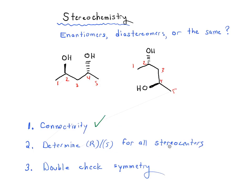Next, we want to determine R and S for all stereocenters. Let's make sure we can do that here. First of all, we've got to identify the stereocenters — hopefully you can tell we've got stereocenters here and here. Now we can always draw in the hydrogens; it can help to draw them in to make sure we can see everything connected to these stereocenters. Whenever you're in doubt, it never hurts to draw those things in.